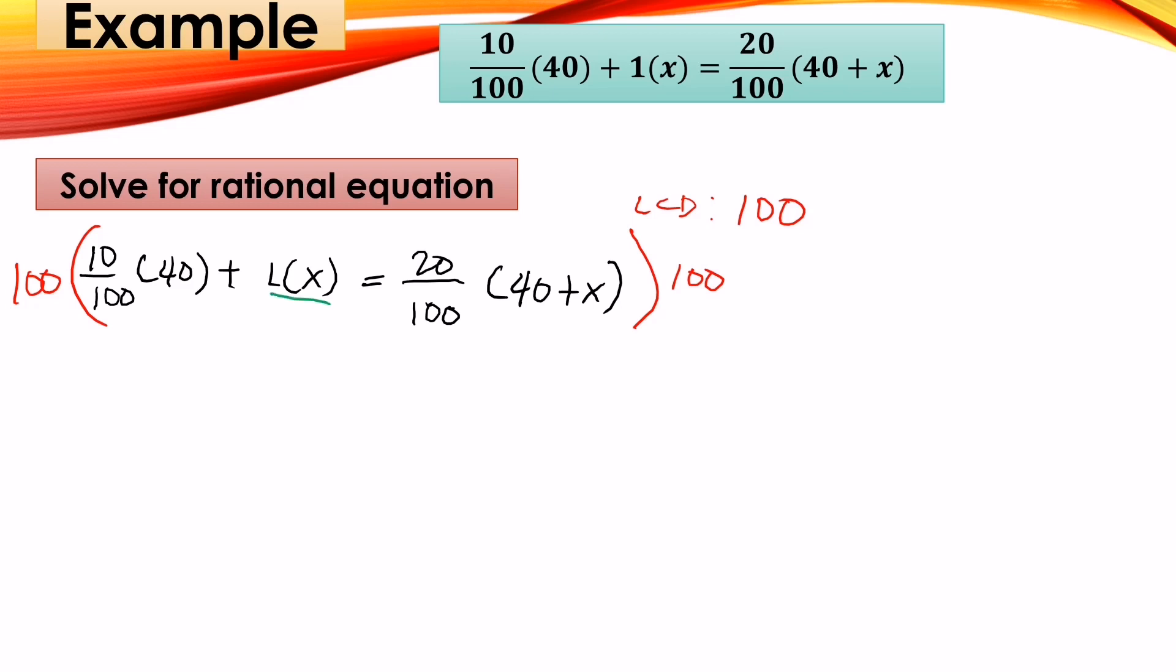The denominator here is 1, so 100 divided by 100 is 1. So 1 times 10 is 10, times 40 plus 100 divided by 1 is 100 times x, which is 100x, equals 20 times (40 plus x).